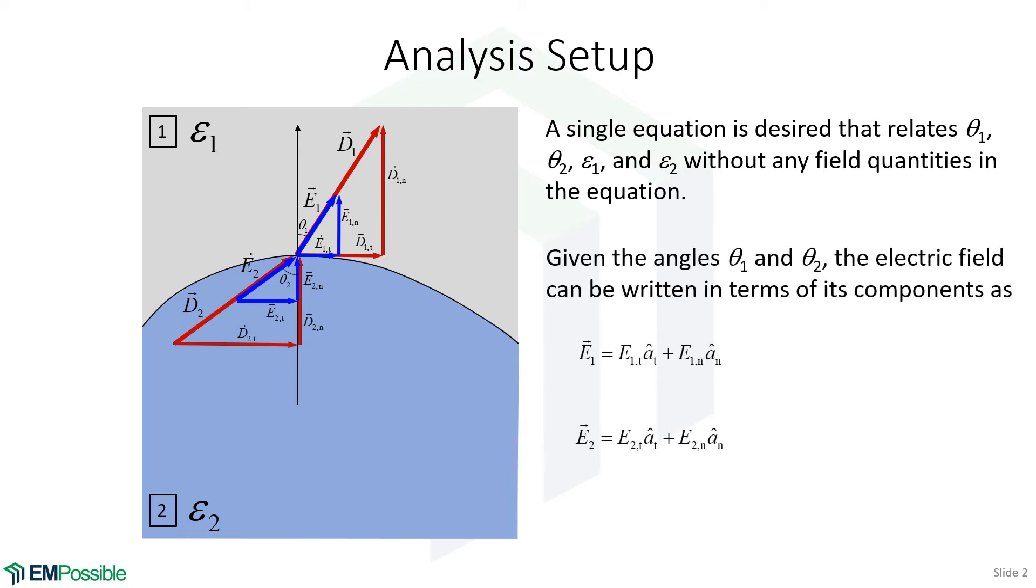So the first step in this is to write E1 and E2 in terms of their normal and tangential components. And we would like to do this using those angles, theta one and theta two. So at first we just write E1 and E2 by decomposing it into its tangential and normal components.